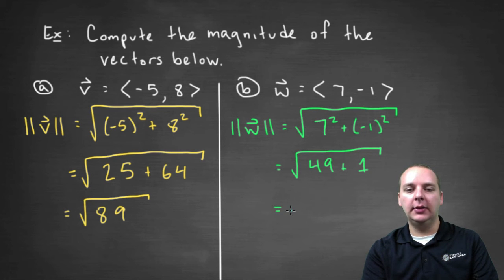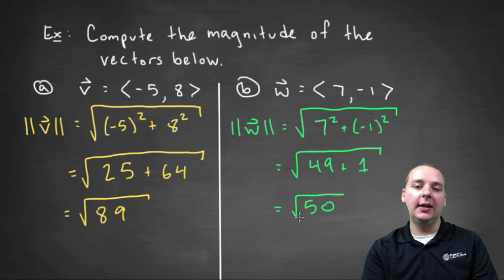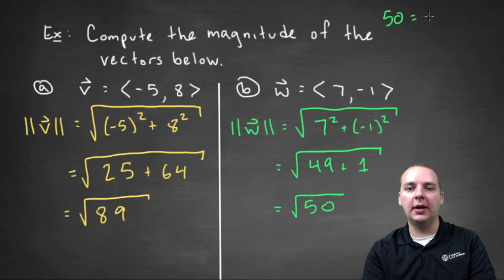and that would be the square root of fifty. Now this actually does simplify, because fifty, as you know, is twenty-five times two.